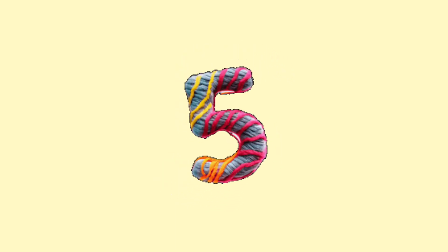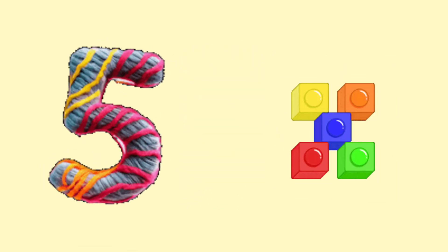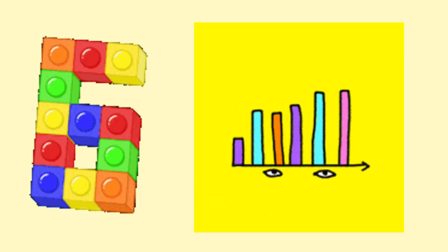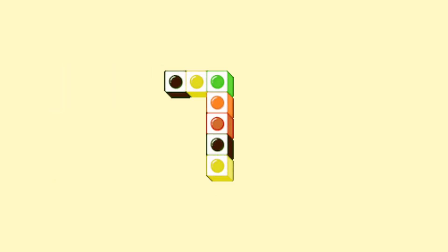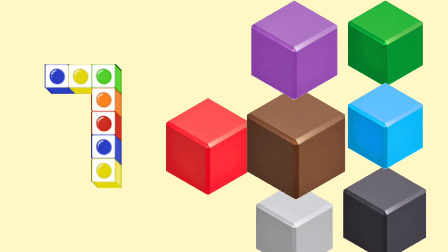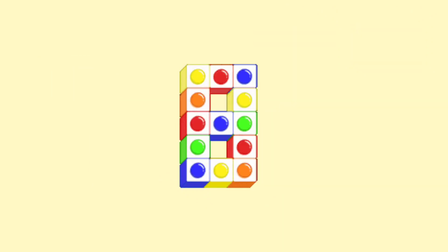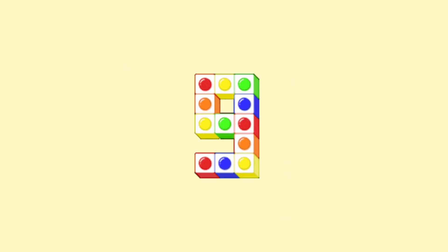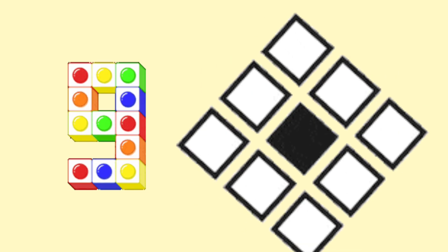5 - you can see five cubes. 6 - you can see six slimes. 7 - you can see seven cubes. 8 - you can see eight blocks. 9 - you can see nine squares.